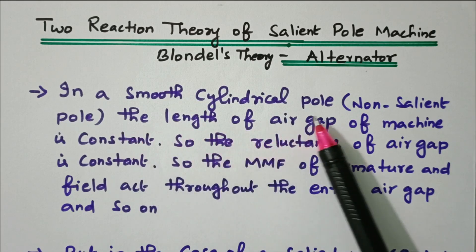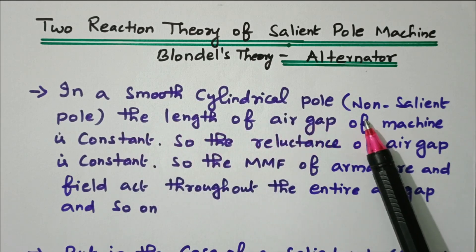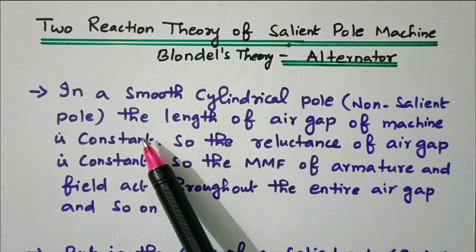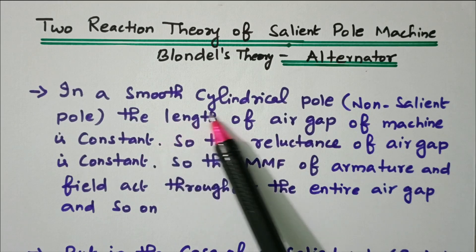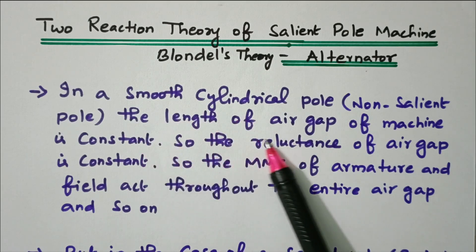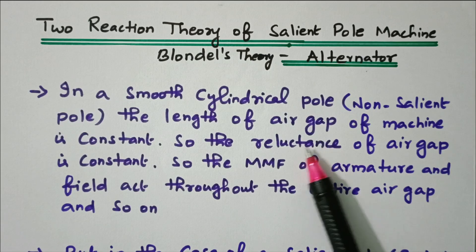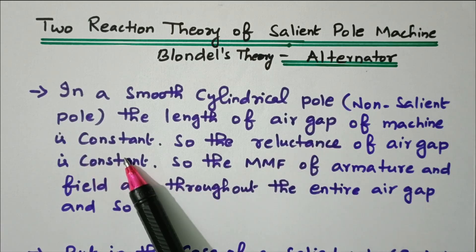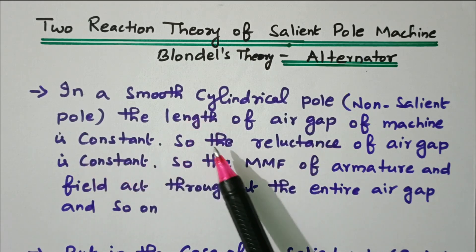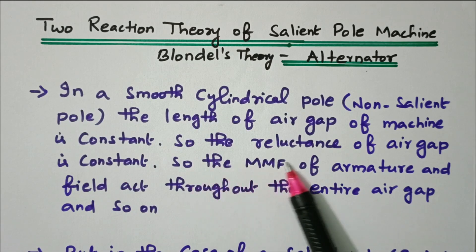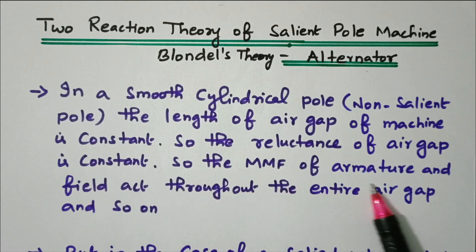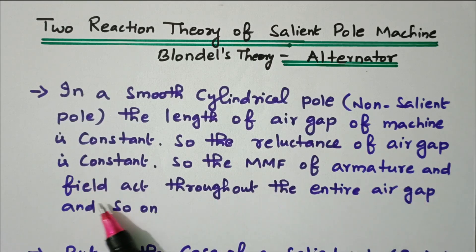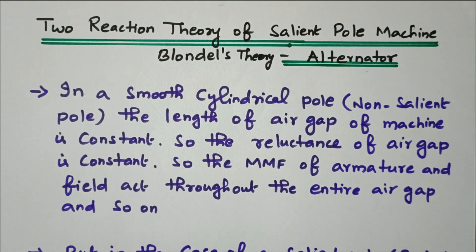In a smooth cylindrical pole — that is, non-salient pole — the pole is not projected; it is smooth and cylindrical. The length of the air gap of the machine is constant because of the smooth cylindrical shape, so the air gap is constant. Therefore, the reluctance of the air gap is constant, and the MMF of the armature and field act throughout the entire air gap uniformly.